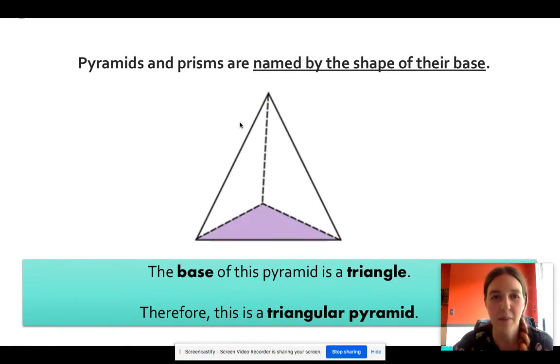Because this pyramid is sitting on a base of a triangle, we call it a triangular pyramid. So the name of the shape comes first, the shape of the base, and then whether it's a pyramid or a prism. So this is a triangular pyramid.